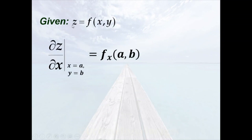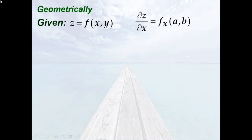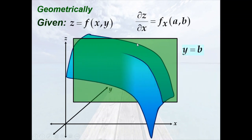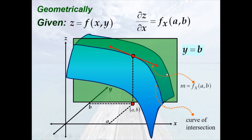When we extend this to a function in two variables, say z equals f of x, y, we have the idea of partial derivatives. Getting the partial derivative of z with respect to x evaluated at x equals a and y equals b will give us the slope of the tangent line to the curve of intersection of z equals f of x, y and the plane y equals b, at the point (a, b, f(a,b)). Geometrically, we have this surface f and the plane y equals b. The curve of intersection of this plane and the surface is shown, and the slope of the tangent line passing through this point is given by the partial derivative of f with respect to x.